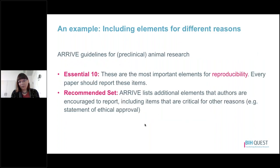Here's an example of one guideline that includes different elements for different reasons, and they're very clear about stating why different elements are included. This is the ARRIVE guideline, which some of you may already be familiar with, and it is designed for researchers who are doing preclinical animal research. The guideline is divided into two sets of elements: the first is the Essential 10, the most important elements for reproducibility, which should be reported in every paper.